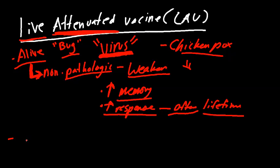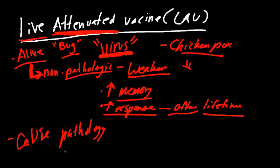A disadvantage of a live attenuated vaccine is it can, in rare instances, revert back through a mutation and cause pathology. You may hear stories about how you were given a polio vaccine and got polio — well, the odds are so minute. Out of all sample sizes, just one instance of this happening. Since the bug is alive, through chance mutation, it may regain some of its pathologic factors and be able to cause pathology — actually introducing a live virus that causes disease into a patient.